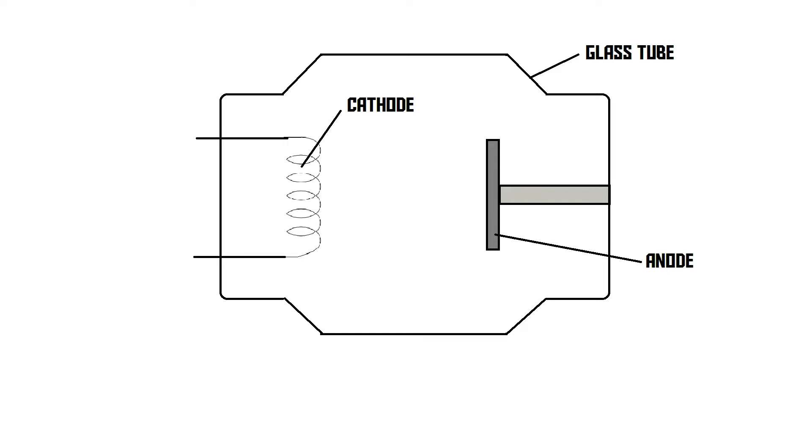Inside this tube, there is something called a cathode and something called an anode. When the X-ray machine is turned on, the anode becomes positively charged, meaning there's a lack of electrons inside that anode. The cathode is connected to a low voltage power supply. This cathode then heats up, just like the filament of a light bulb, and starts to glow.